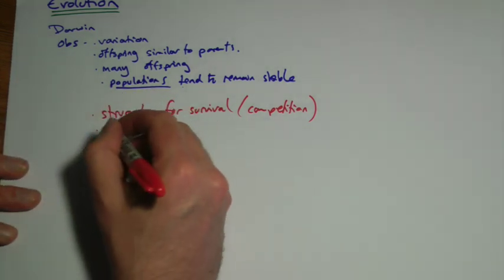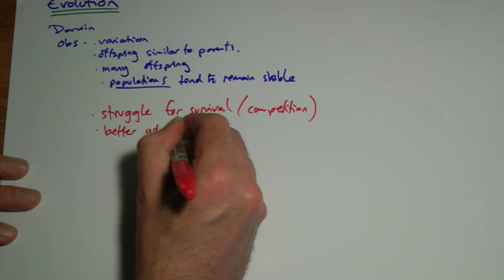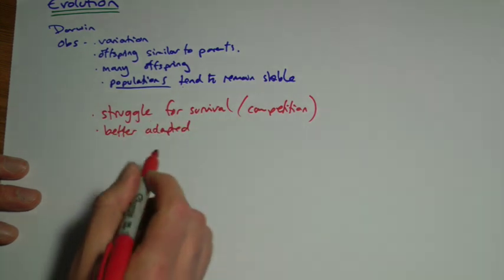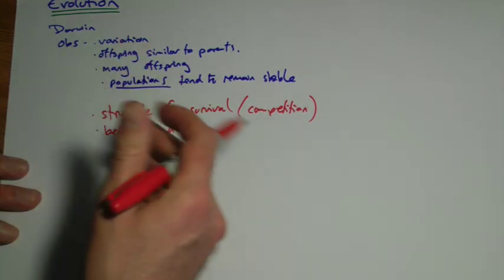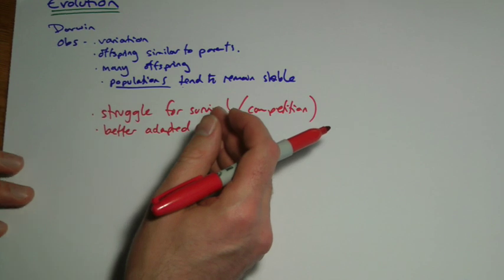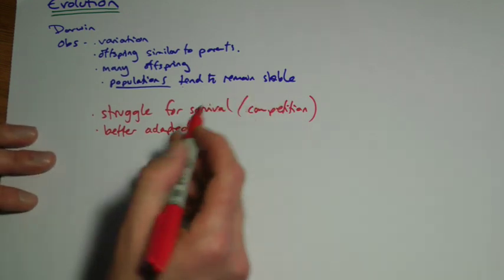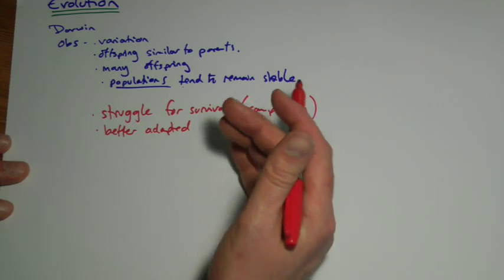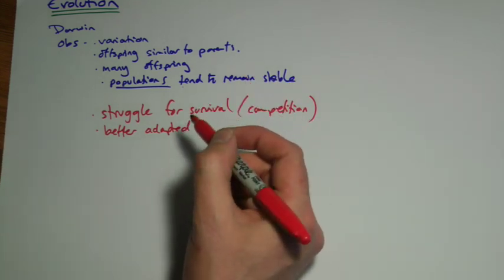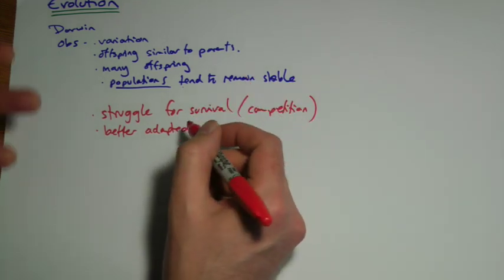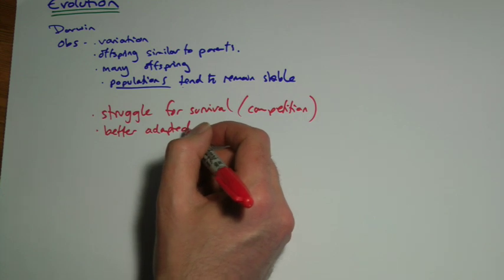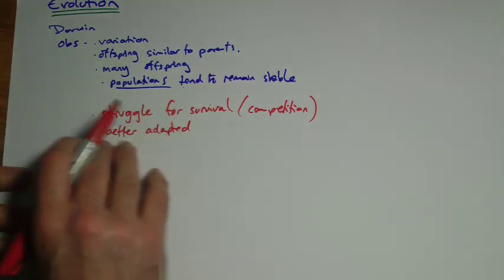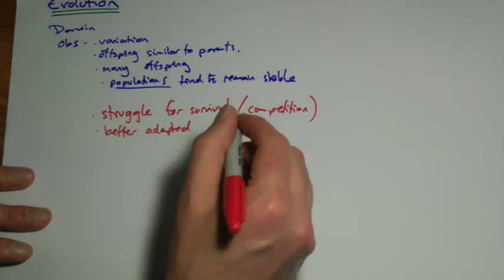And whichever organism was better adapted, an adaptation remember is a characteristic that helps you, that gives you an advantage in your current environment. There's no such thing as a best adaptation overall. It's only best to whatever your environment was. An animal that is very hairy might, that might be a good adaptation if you're living somewhere cold. It's not an adaptation if you're living somewhere hot. It's a characteristic that is actually going to be bad for you.